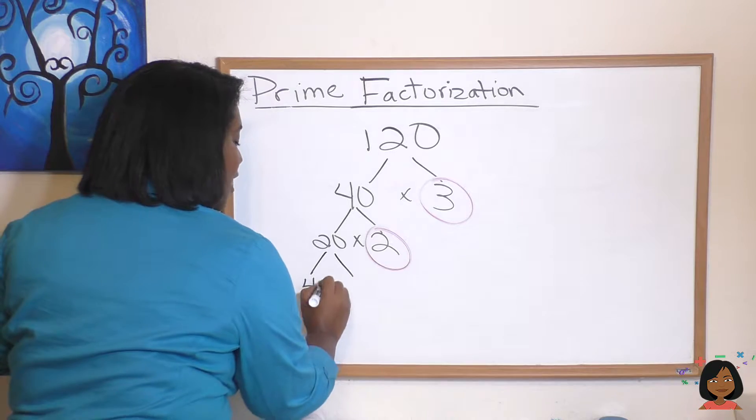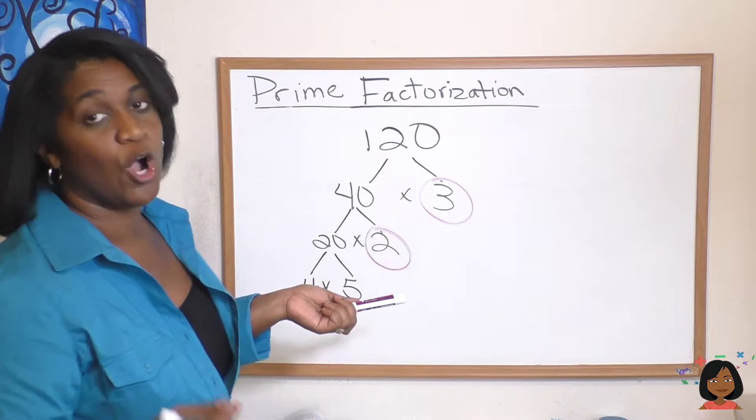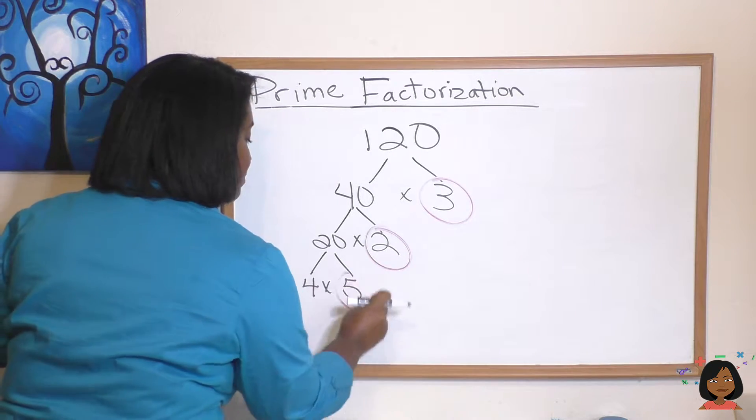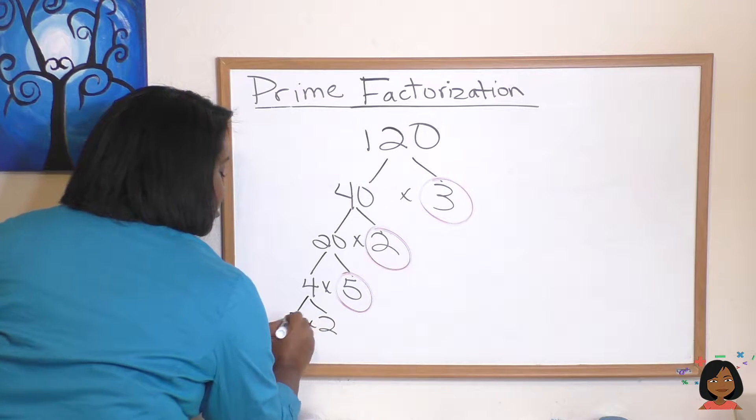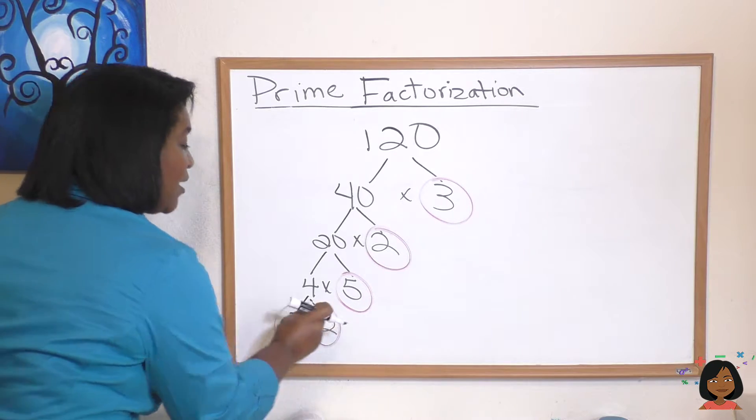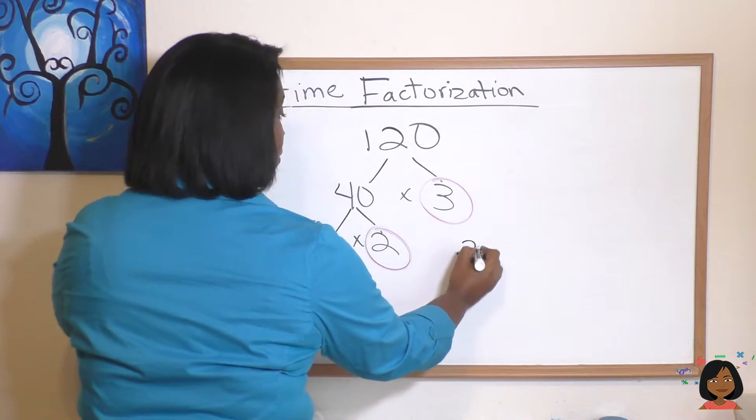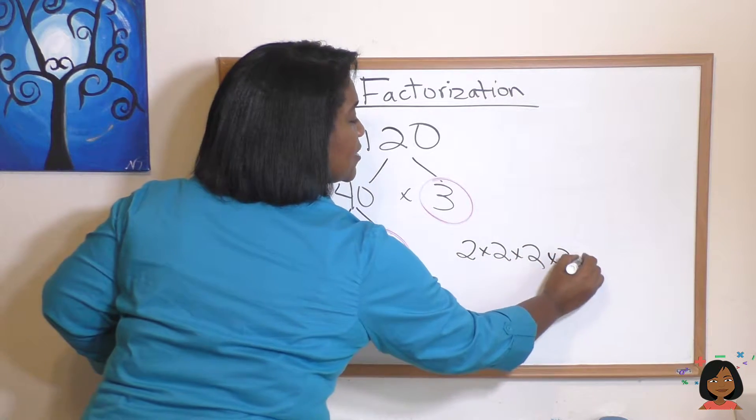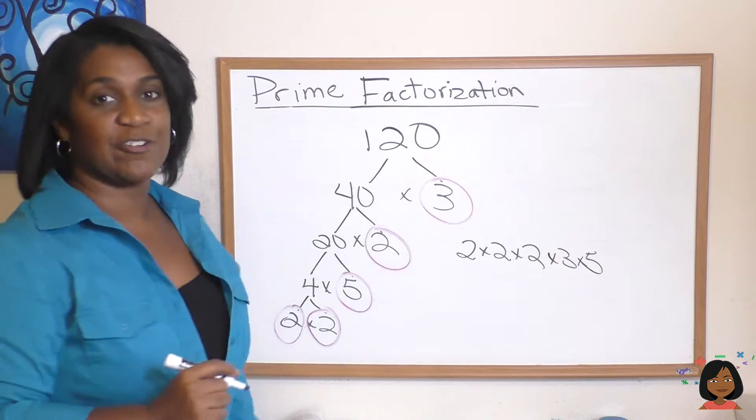How about 4 times 5 for the 20? Is 4 prime? Nope. So we'll keep going on the 4. But 5 is prime. So I'm going to circle it. And we know that 4 is the same thing as saying 2 times 2. And we already know that 2 is prime. So guess what? We are done. All there is to do is now to write it. We have 2 times 2 times 2 times 3 times 5. That is the prime factorization for 120.